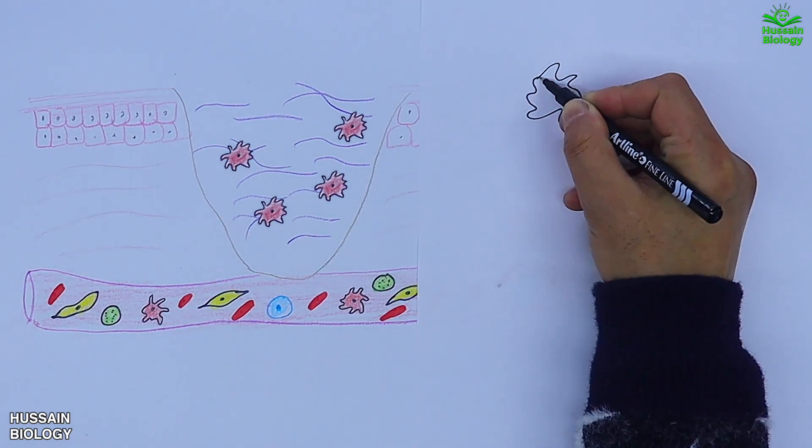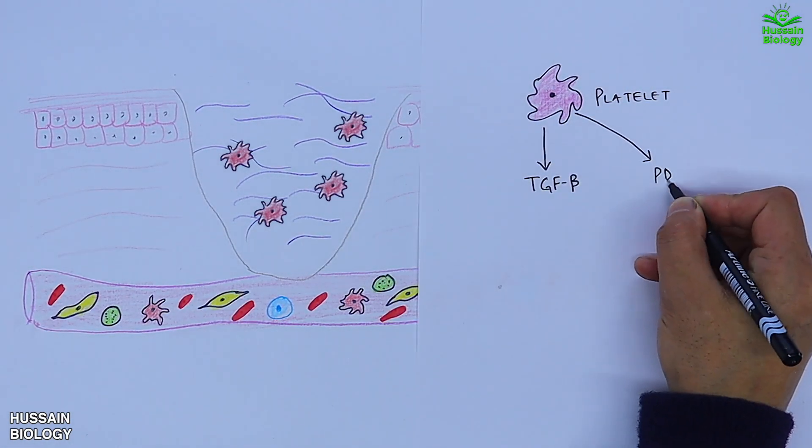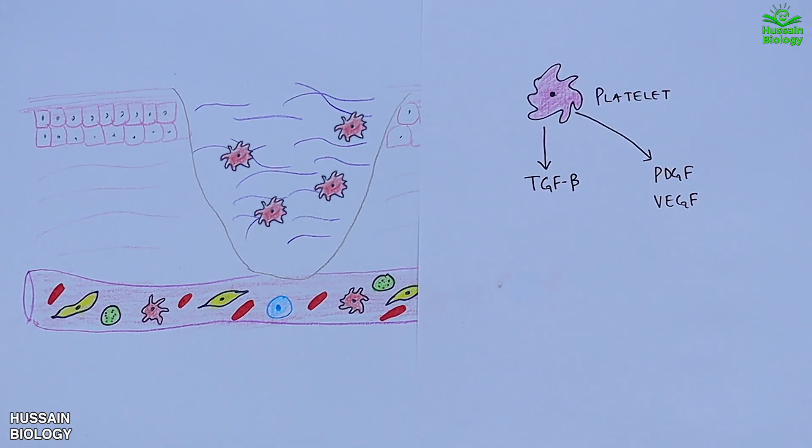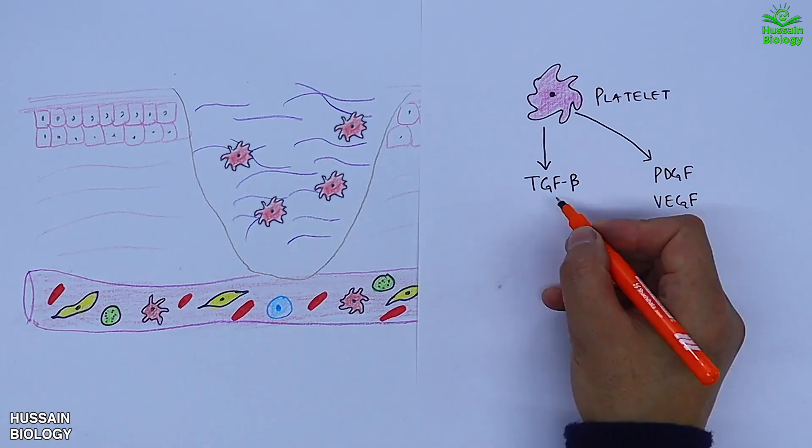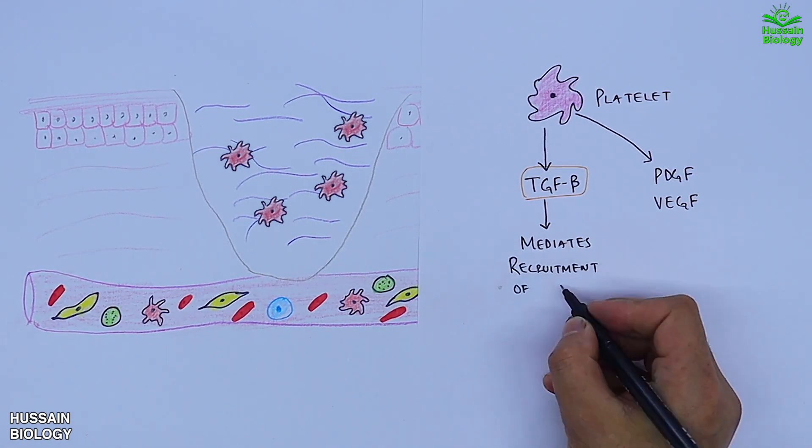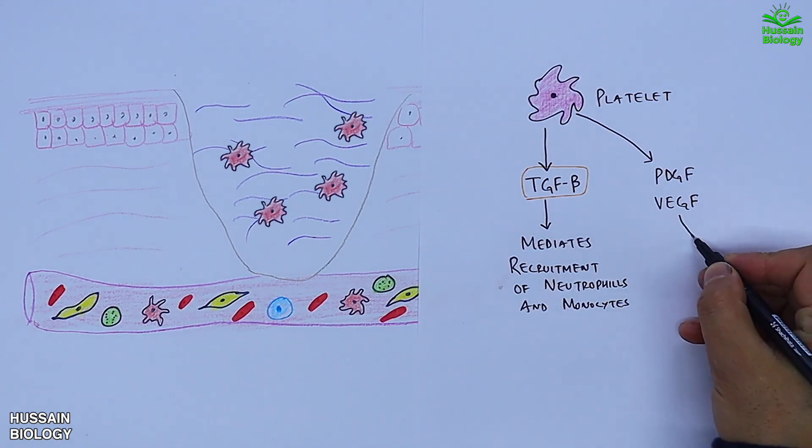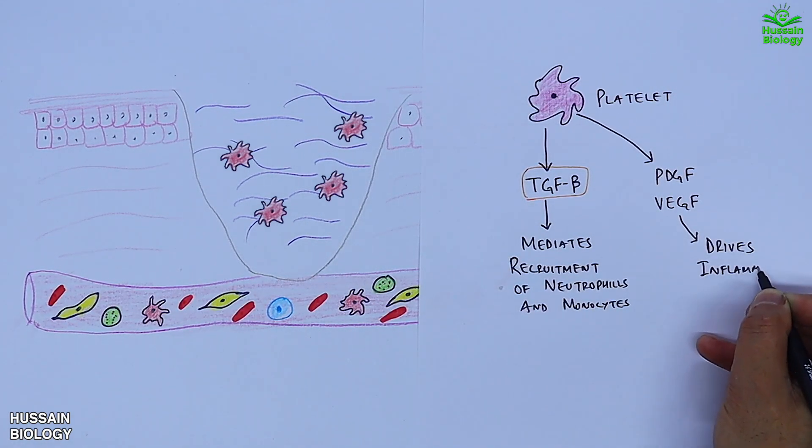Furthermore, we see these platelets secrete TGF-beta, PDGF, and VEGF factors. We see the TGF-beta mediates recruitment of neutrophils and monocytes shown in the diagram, whereas the PDGF and VEGF drive inflammation.